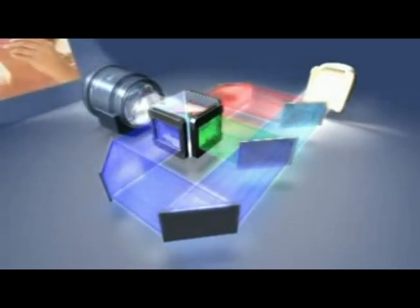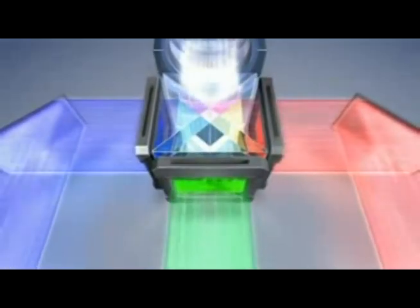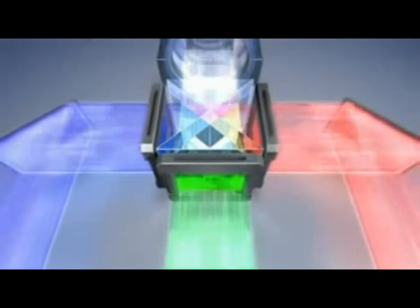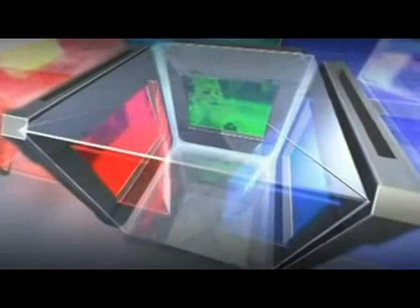Each color is then passed through the corresponding LCD chip, where the image takes form and comes to life. After the images have permeated the LCD chips, they are recombined using the prism to produce rich, colorful images,